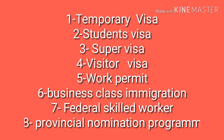There are 8 types of different visas that Canada offers. First is the temporary visa. Second is the student visa. Third is the super visa. Fourth is the visitor visa. Fifth is the work permit. Sixth is the business class immigration. Seventh is the federal skilled program, and eighth is the provincial nomination program.